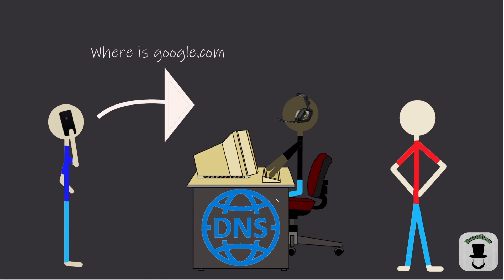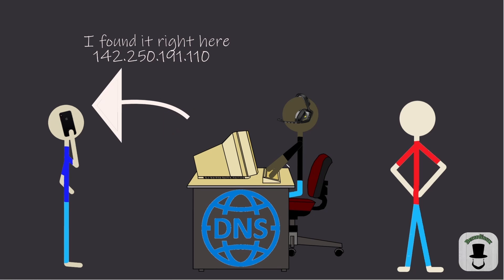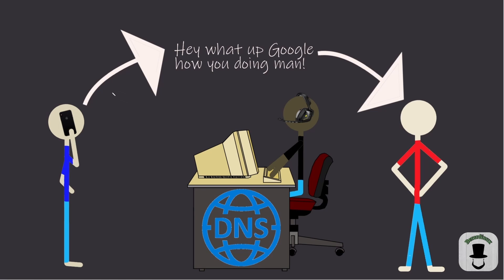I can show you right here — we're asking the DNS server, or the operator in our analogy, where's google.com. Then our DNS server is going to send back to us the IP address correlated with google.com. Once we have the actual IP address, we can stop talking to the DNS server and just talk directly to google.com. That's pretty much what a domain name server is.